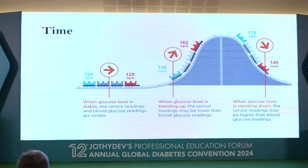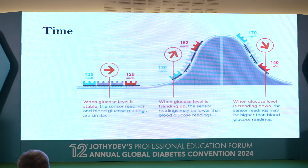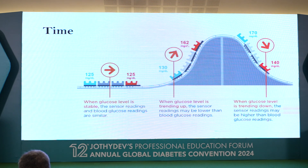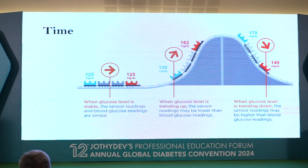Another important concept is time lag. As mentioned earlier, interstitial fluid glucose lags behind capillary glucose — there is a time lag of 8 to 10 minutes, which we should be aware of. This is particularly important when there is a rapid fluctuation in sugar levels, whether rising or falling very fast. When sugar levels are rising rapidly in the capillaries, the interstitial fluid may lag behind and not reflect the true value correctly. Similarly when falling rapidly, you may not capture it accurately in the CGM device. So when levels are changing rapidly, be aware of the time lag.